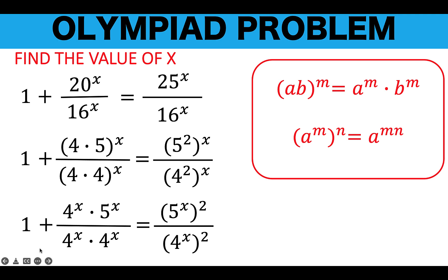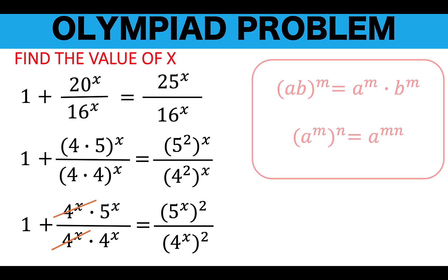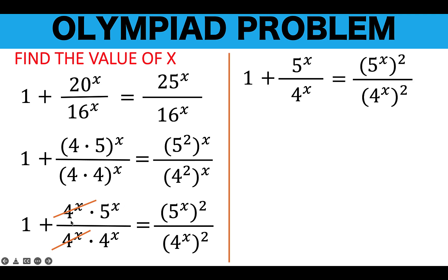The reason for switching the exponents is to convert this into an equation that is quadratic in form. But first, let's simplify. We have a common factor of 4 raised to x in the numerator and 4 raised to x in the denominator, so we can cancel that out. We arrive at this equation: we copy the 1, the second term becomes 5 raised to x over 4 raised to x, and we copy the right side.